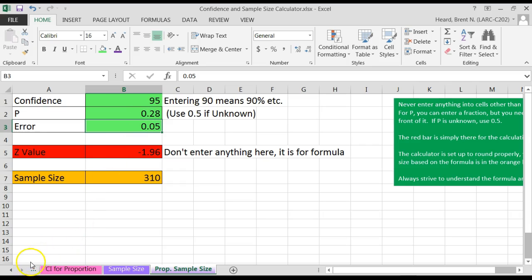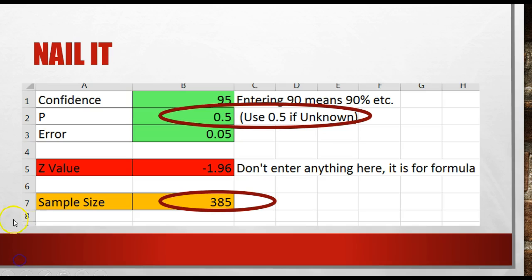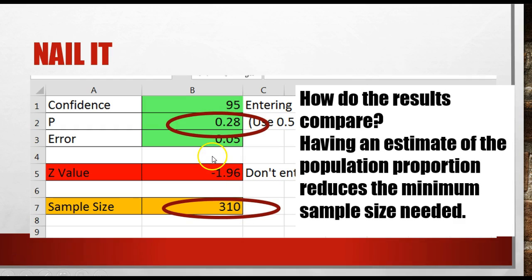So when it was unknown, I put in a 0.5 and I got a sample size of 385. When they wanted to say 28%, I put in 0.28 and I got a sample size of 310.